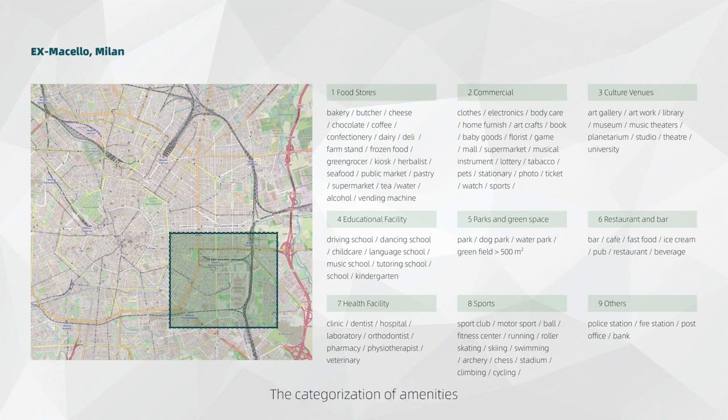The categorization of amenities varies from different researchers. The mayor's agenda for a green and just recovery includes health, school, social, commercial, leisure, and culture as groups, while IMM produces a more specified way for clustering the amenities, which is food, commercial, culture, education, green space, restaurants and bars, health facilities, sports, and public services. This specification helps to better layer different services and gives the possibility to go into details.